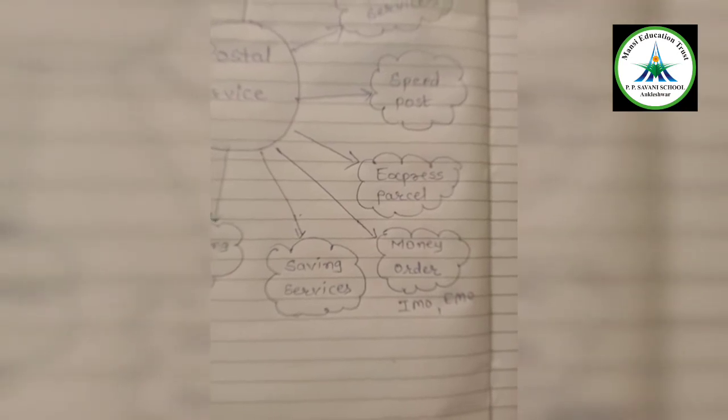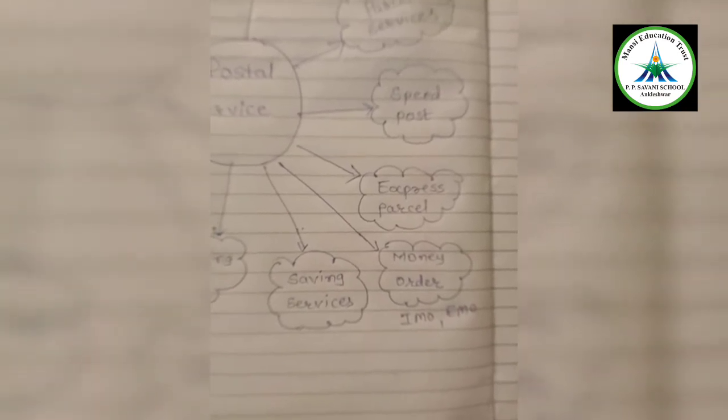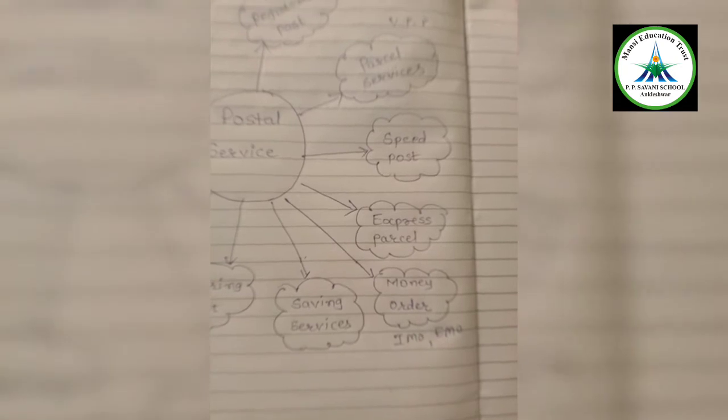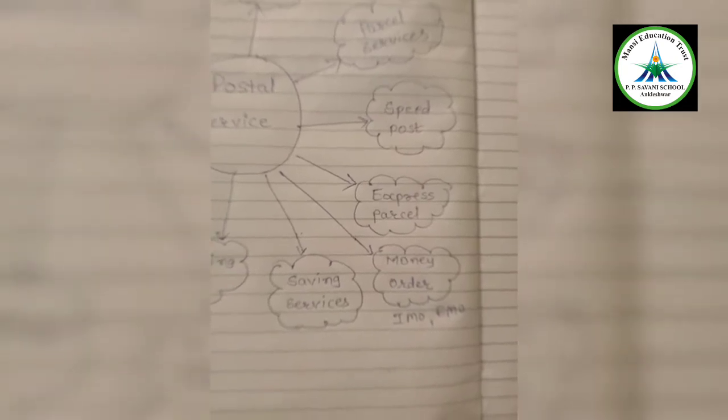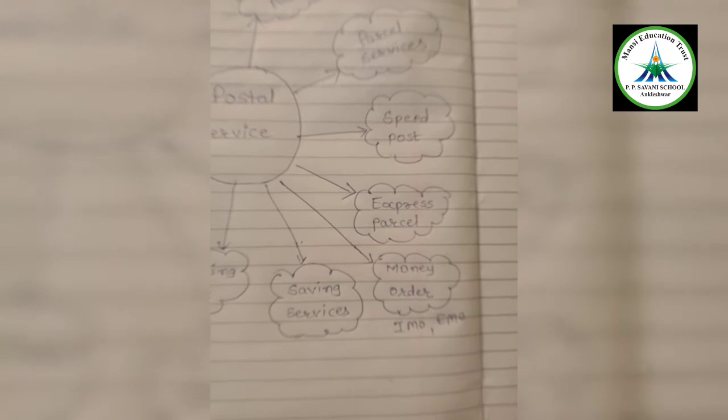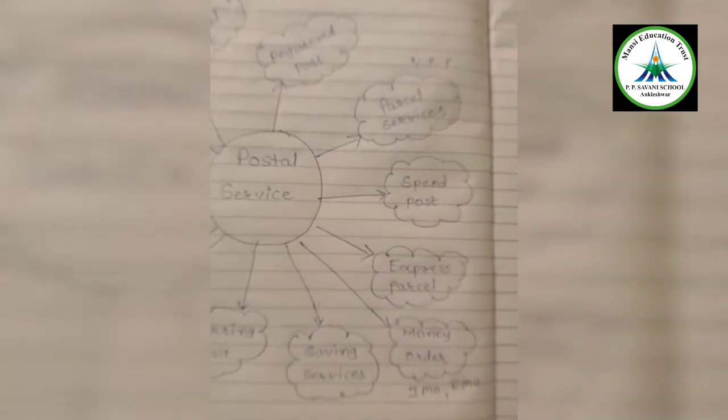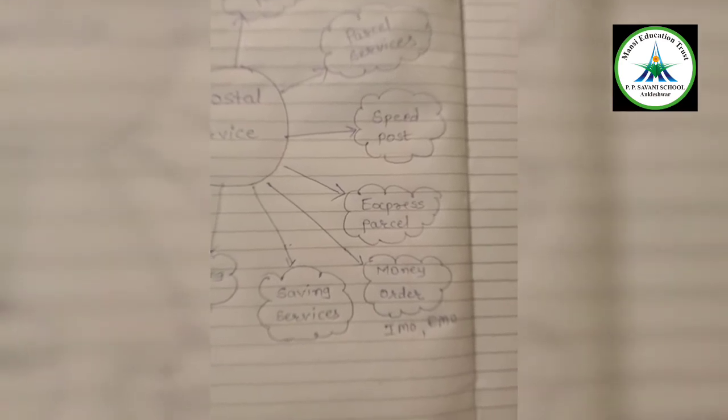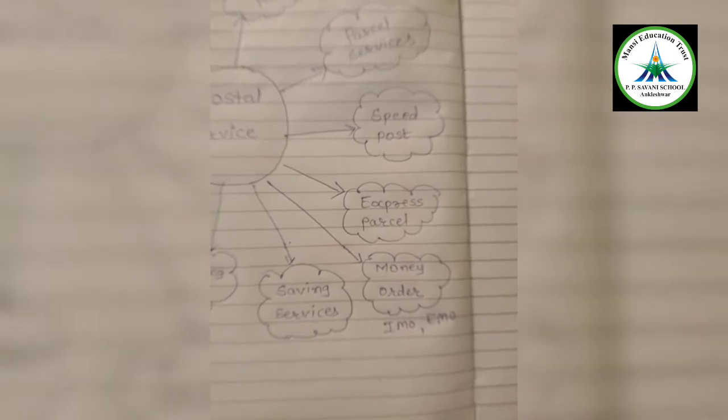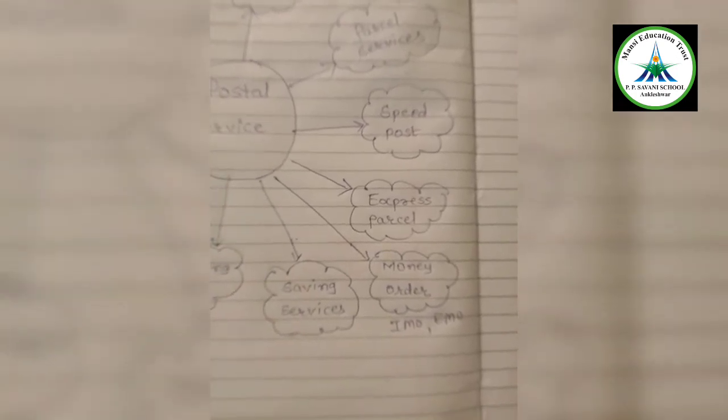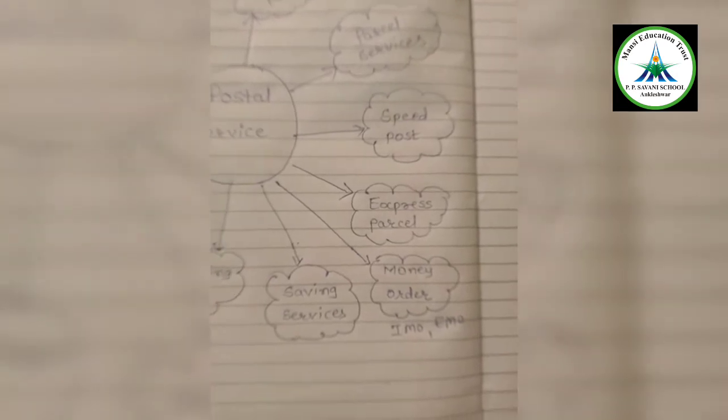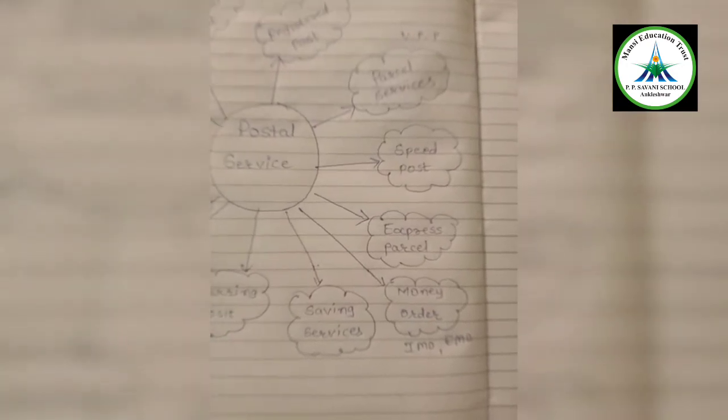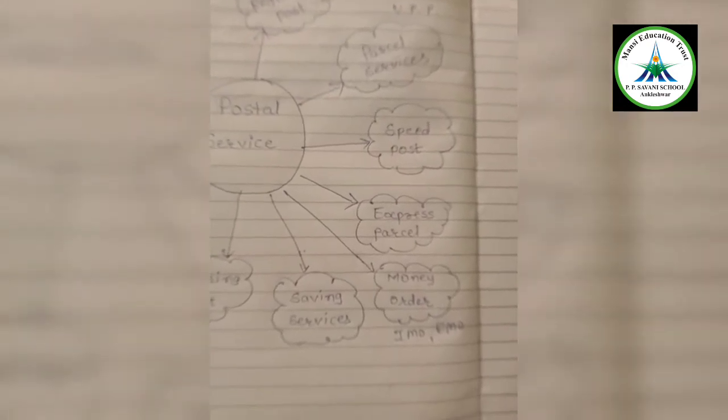IMO means instant money order in which rupees from 1,000 to 50,000 can be sent to any part of India within a day, and for that you have to pay a commission. When you are going to use this, a secret number envelope is given to the sender and that secret number the sender gives to the receiver. So when receiver will receive the money, he has to show that secret number and a photo ID.